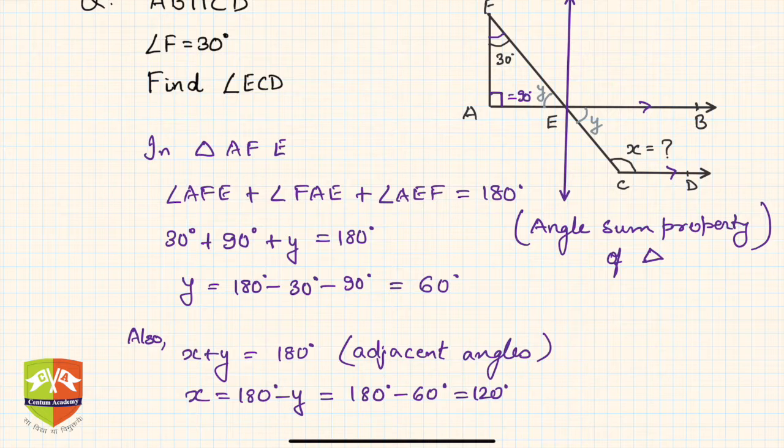This line is parallel to AF. So what will happen? If this is 30 degrees, then this is also 30 degrees by alternate angles. If that is 30 degrees, this angle has to be 30 degrees by vertically opposite angles. And if this was 90 degrees, this angle also has to be 90 degrees.